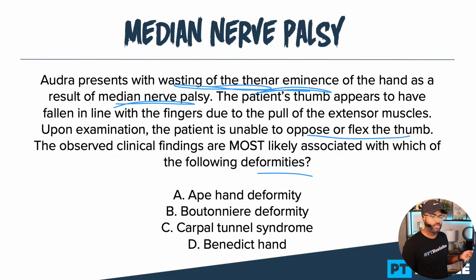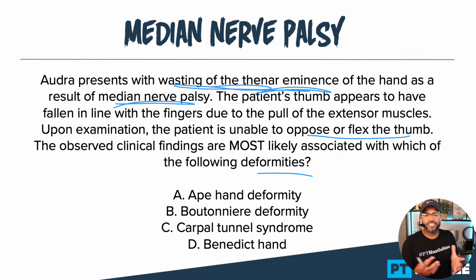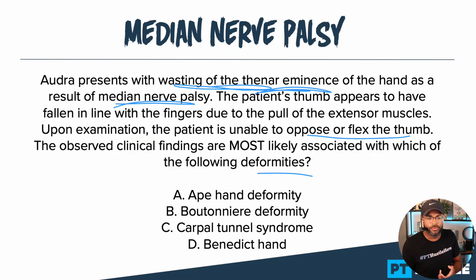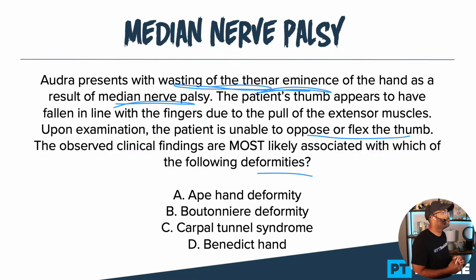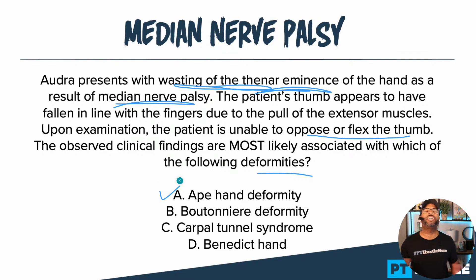Ape hand deformity is typically caused by some type of problem with the median nerve — the median nerve is damaged and the muscles innervated by it are now wasting. They're weak and not able to perform flexion, abduction, or opposition. Ape hand deformity fits the picture, but let's continue and check the other answers.